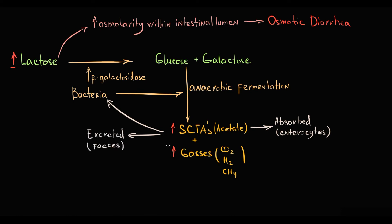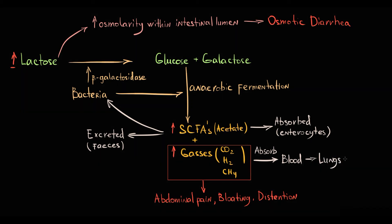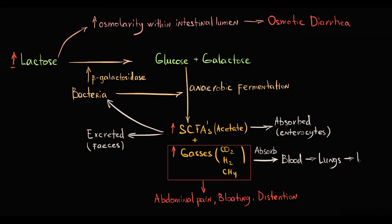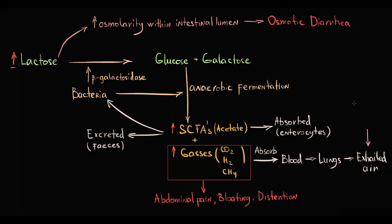Accumulation of gases in the intestinal lumen causes clinical symptoms such as abdominal pain, bloating, and distension. A small portion of gases is absorbed from the intestine into the blood, and through the blood they are delivered to the lungs, where they are excreted by exhalation. This feature makes it possible to determine the amount of gas production in the intestine by measuring the concentration of hydrogen and methane in the breath using the hydrogen breath test — an indirect method to measure bacterial gas production.